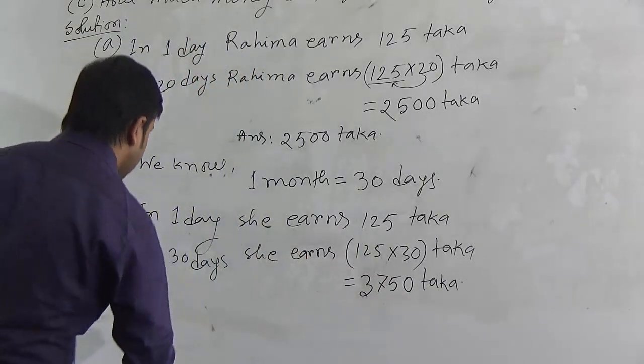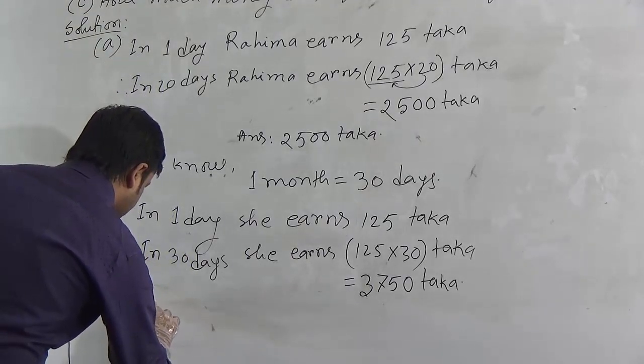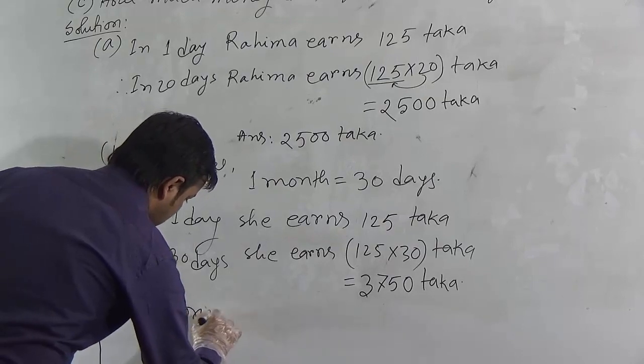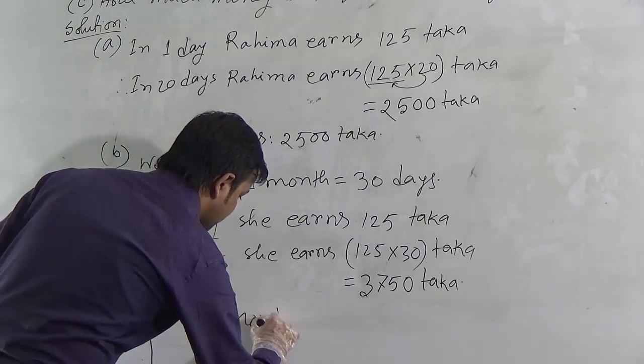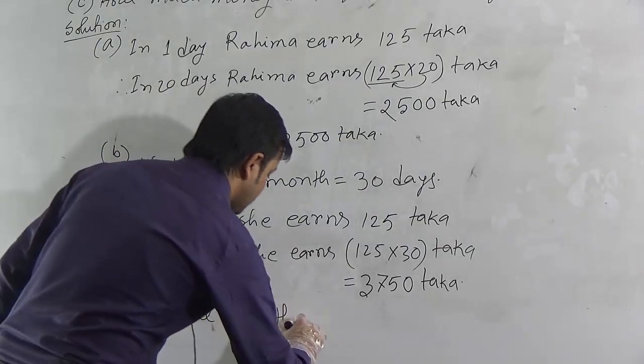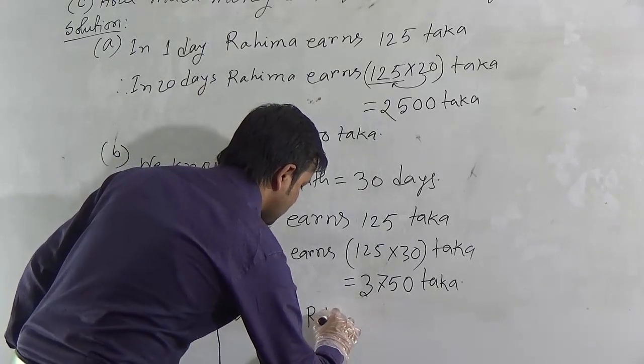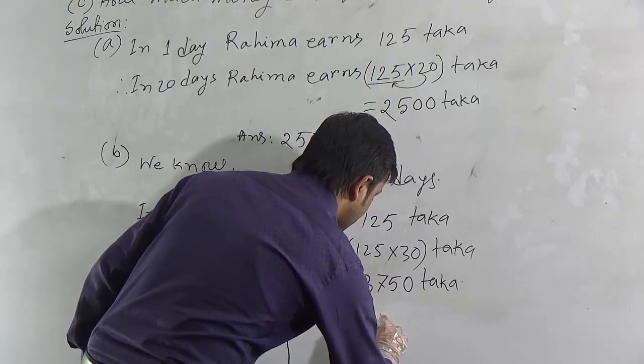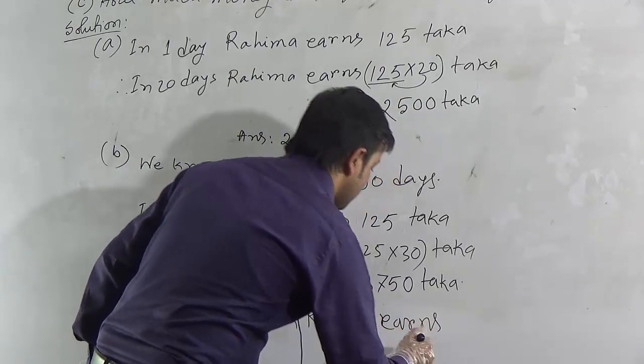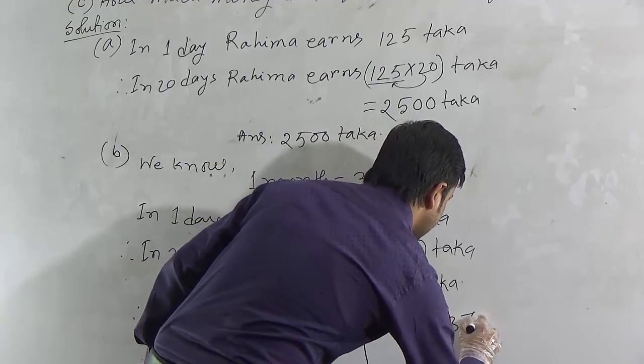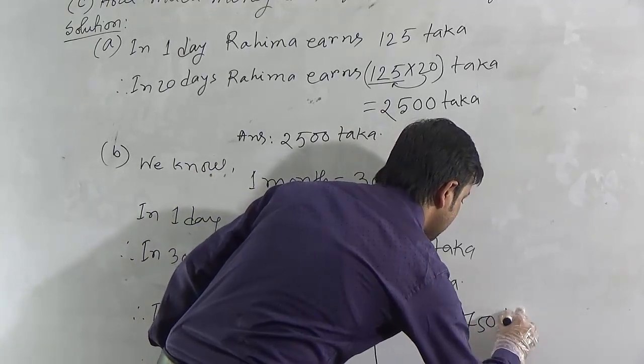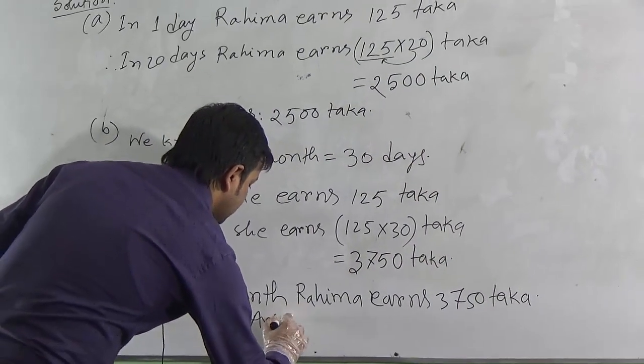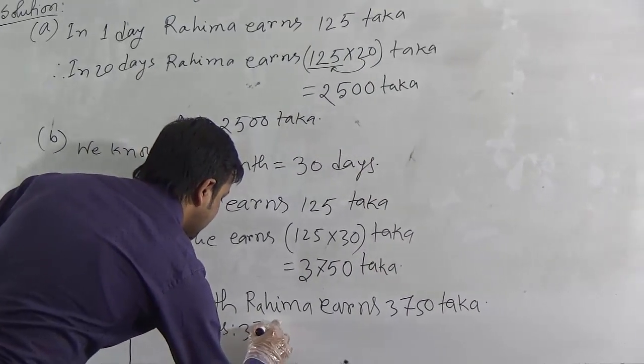So, we can say in 1 month, Rohima earns, therefore in 1 month, 3,750 Taka. This is our required answer. So, we can write the answer here: 3,750 Taka.